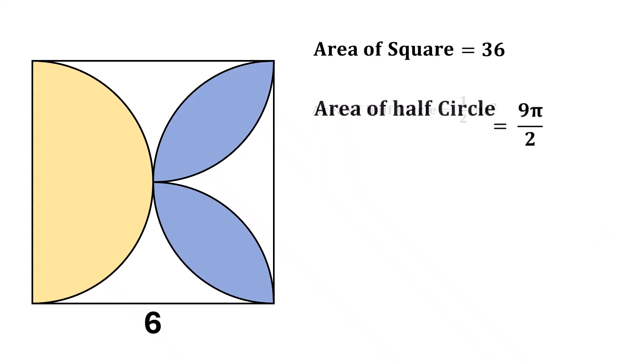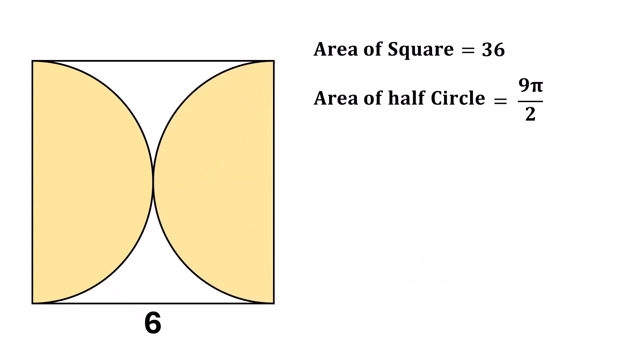Now, the area of the total yellow region is the same as the area of a full circle. So, the area of the yellow region is 2 times 9 pi over 2, which is 9 pi.